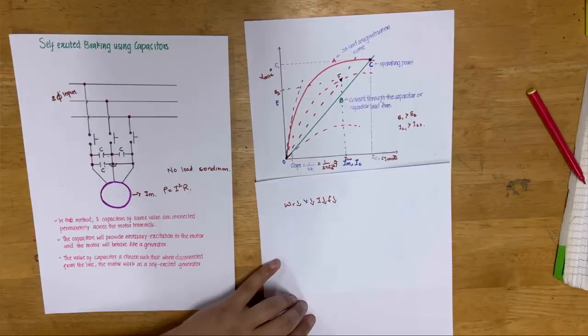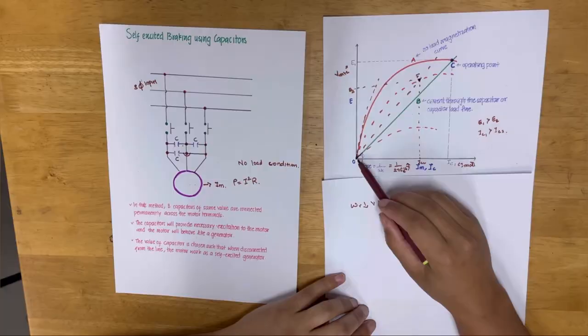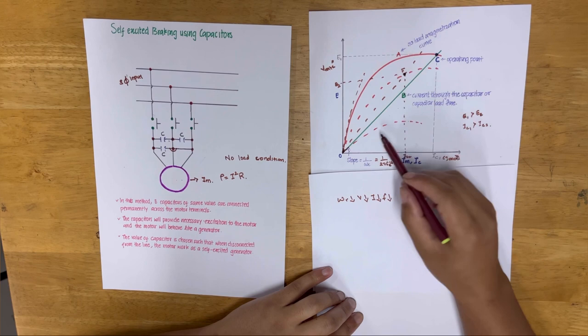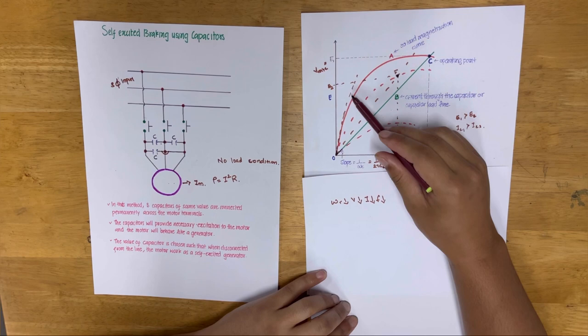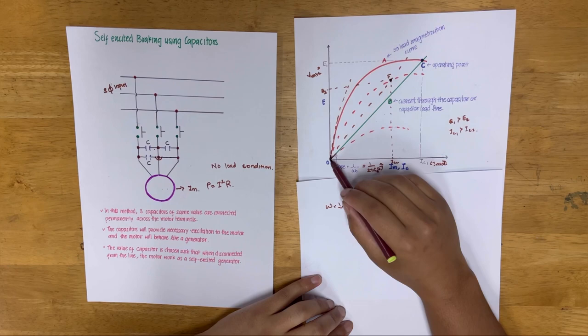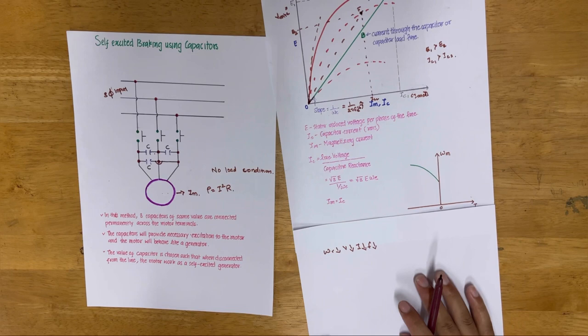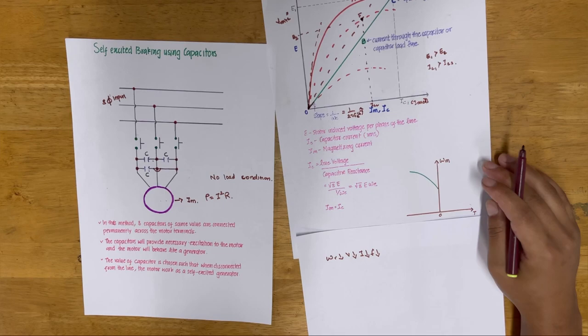As there is no intersection between the magnetization curve and the capacitor load line, the speed-torque characteristic of the self-excited braking using the capacitor looks like this graph shown.